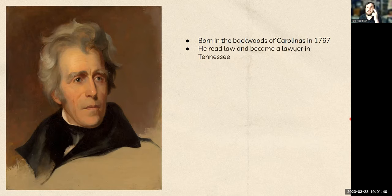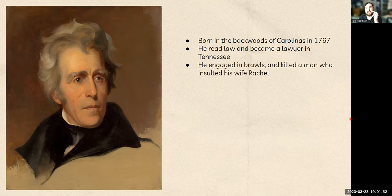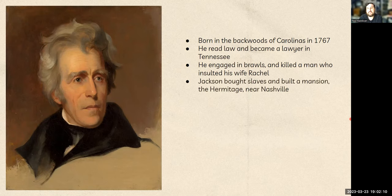He and his family will move from the Carolinas to Tennessee, continuing to push west as the U.S. gets more territory. As he grows up, he'll eventually become a lawyer in Tennessee — but you can take the man out of the country, but you can't take the country out of the man. He continues to get drunk, square up with people at the bar, and he will even go so far as to kill a man who insults his wife. He will eventually buy slaves as he gets more wealth and land, and then build a mansion called the Hermitage near Nashville that you can still go and tour to this day.